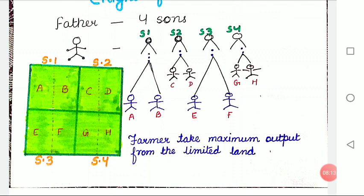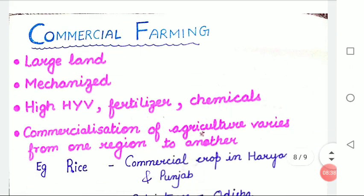Everyone is getting one-fourth part of the land. Now these four sons also have two sons each, so they also divide their part of land among their two sons. What we observe is that a big piece of land is converted into small holdings. This is also known as fragmentation of holdings.